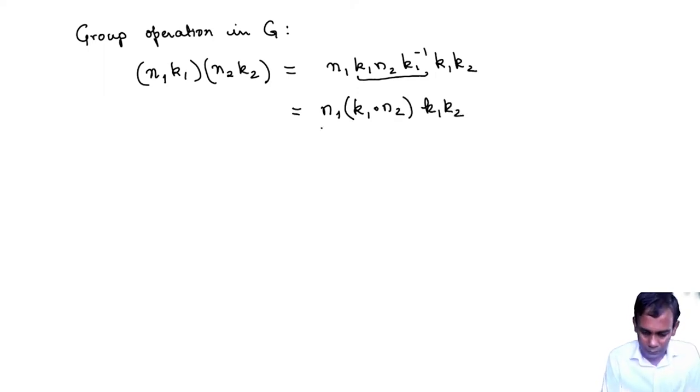That's n1 times k1 dot n2 times k1 k2. So now this is an element of N, this is an element of K. So we have expressed a product of two elements written in the form n times k again in the form n times k.